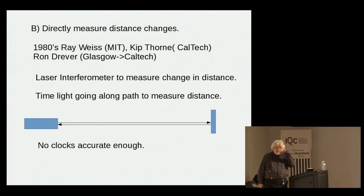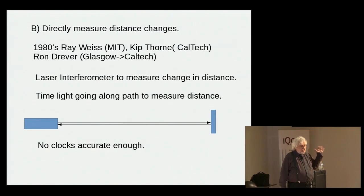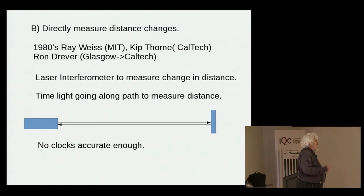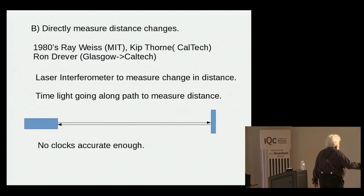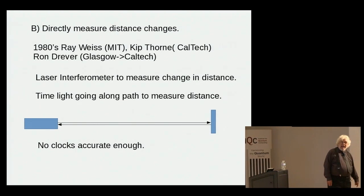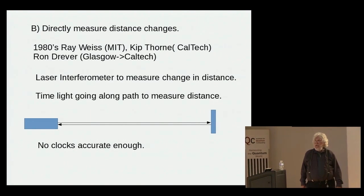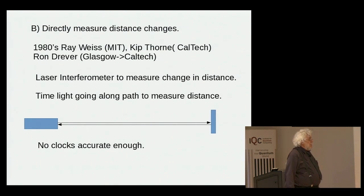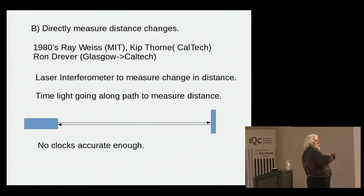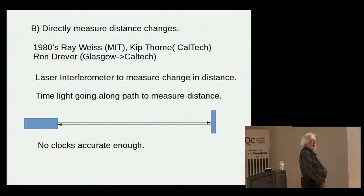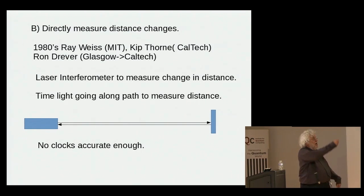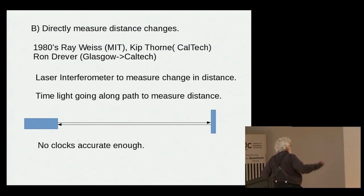Starting in the 1960s, Ray Weiss at MIT and Kip Thorne at Caltech, who hired away Ron Drever from Edinburgh, started up a laser interferometer system at Caltech. The way it works is that you send out light and time how long it takes to get from here out to a distant mirror and bounce back. That time tells you how far away the mirror is, so if the mirror is suddenly farther away, it will take longer for the light to go out and bounce back.